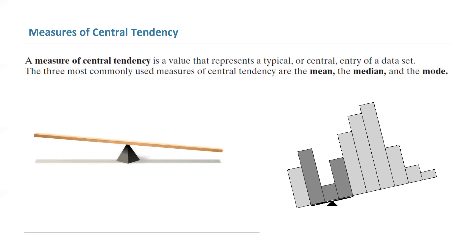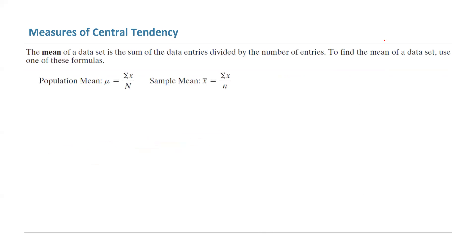This is the definition of measure of central tendency, but what is the formula? In statistics, you're interested in calculating the numbers. To find the mean of the data, you basically take the summation of all data entries and divide it by the number of entries.